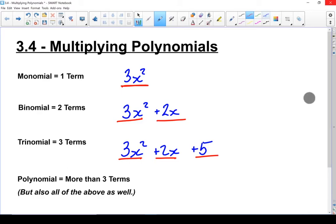And a polynomial, it can just have any number. See, that one's got one, two, three, four, five, six different terms.